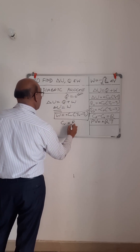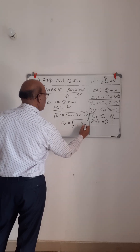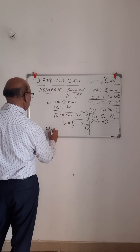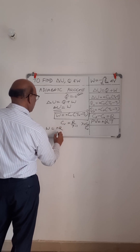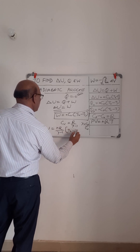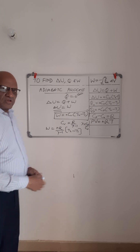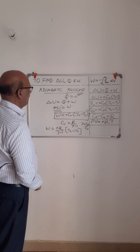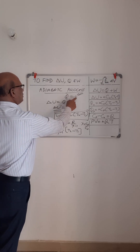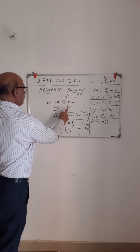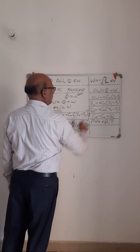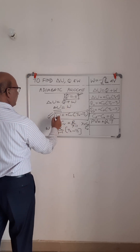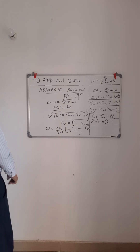This can also be written using Cv equals R divided by (gamma minus 1), where gamma is the ratio of Cp to Cv. So work done equals NR divided by (gamma minus 1) multiplied by (T2 minus T1). For adiabatic process: Q equals zero, W equals delta U equals NcV(T2 minus T1) equals NR(T2 minus T1) divided by (gamma minus 1).